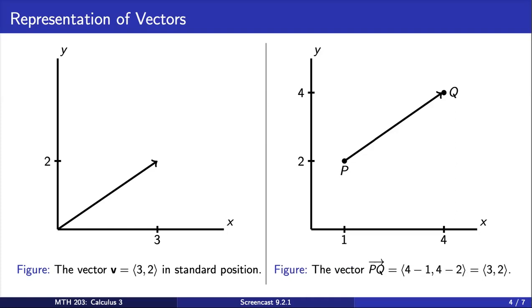Note that another way to get the components of a vector obtained by points is to take the difference of the coordinates of the points. So here, to get the x component of the vector from p to q, we would take the x coordinate of q minus the x coordinate of p.